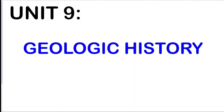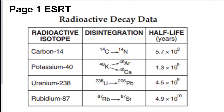The last unit is geologic history. You have to know how to read the half-life chart. Carbon-14 is used to date living things — that's the most common one used. The last three radioactive isotopes are used for older things like rocks, minerals, asteroids, and space stuff. If you need to learn radioactive decay in detail, go check out my geologic history specific video.